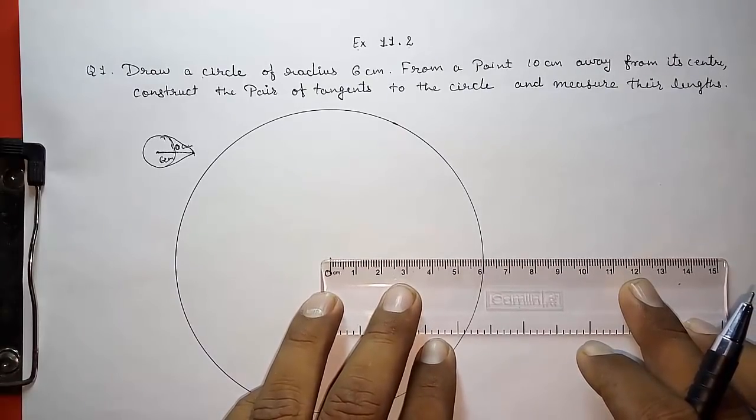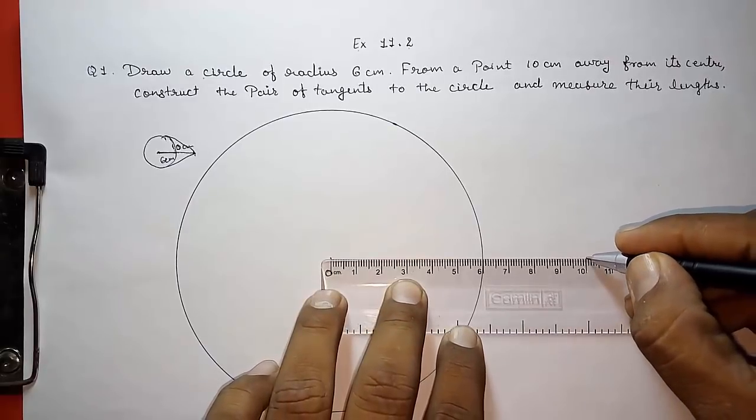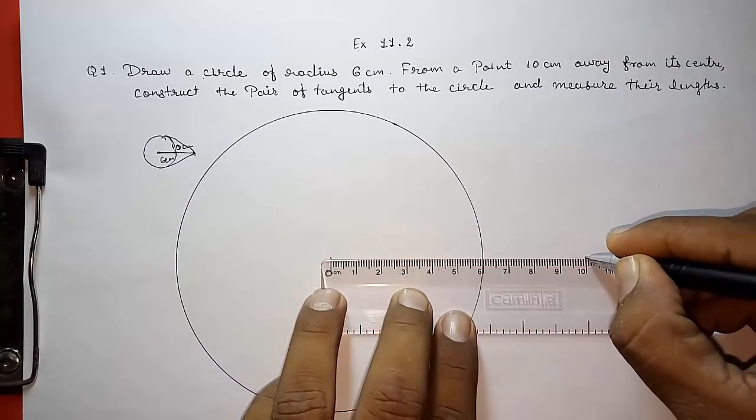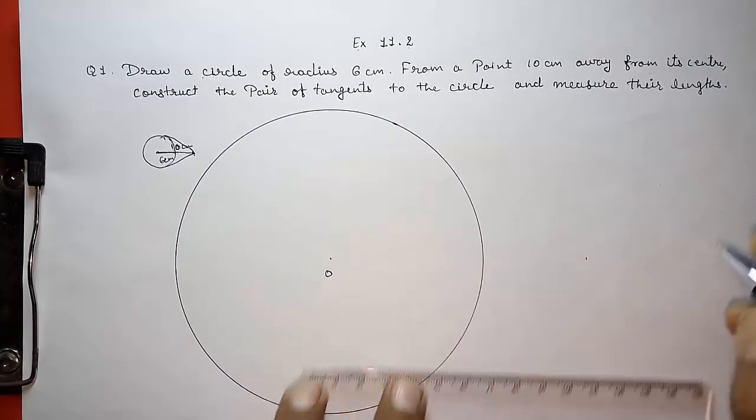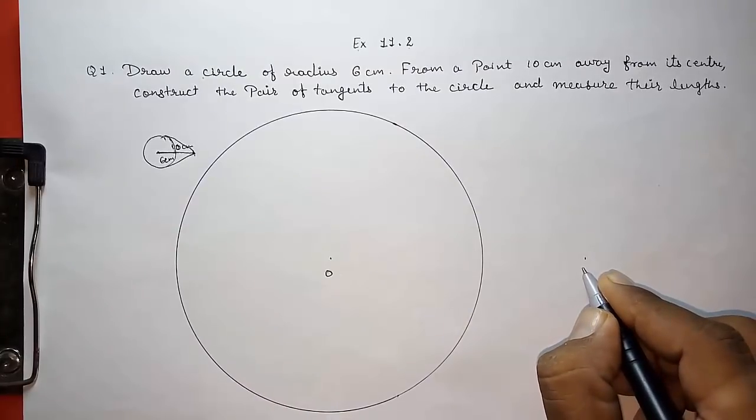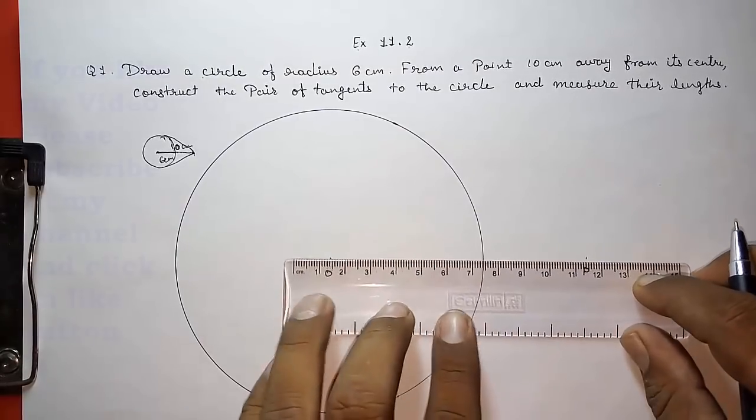Look here. That point will come here. Now give this point name P. Now join O to P.